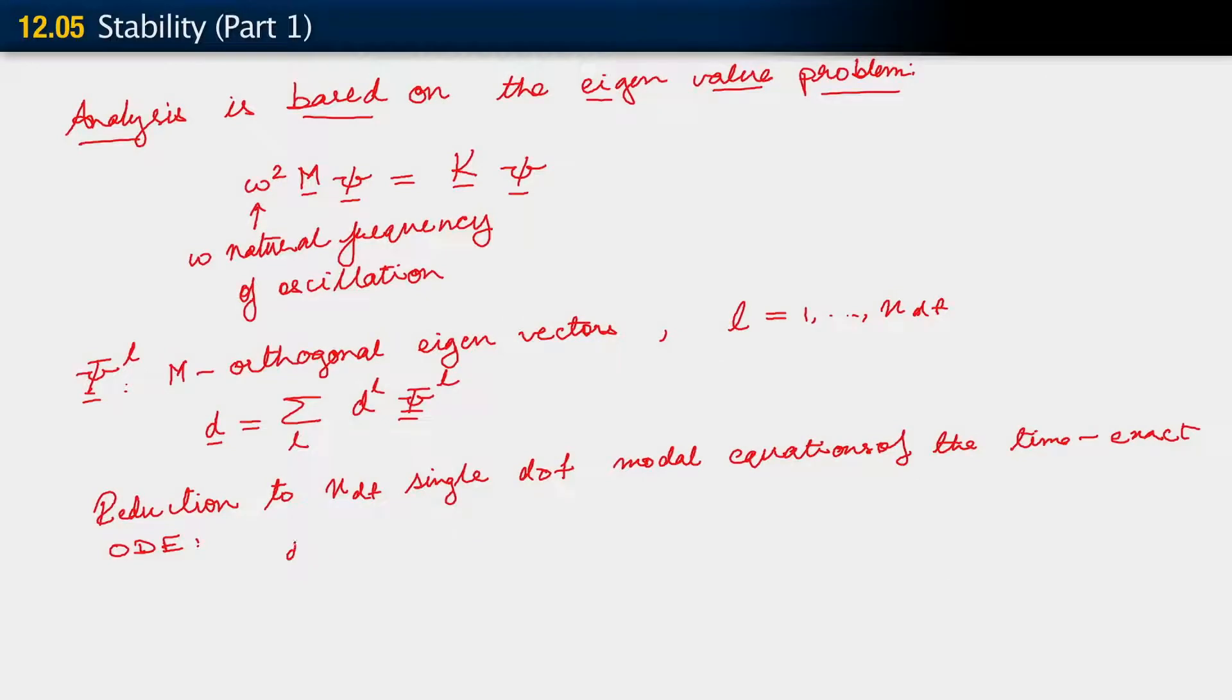The form of those equations is the following for the time exact ODE. This is pretty much the way we did it for the parabolic problem also. We get DL double dot plus 2 CL omega HL DL dot plus omega HL square DL equals 0 if we consider the homogeneous case.